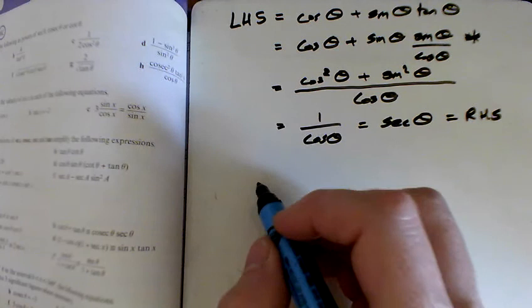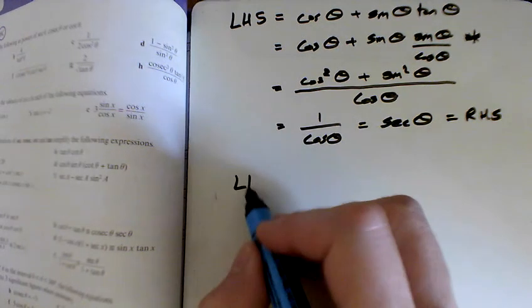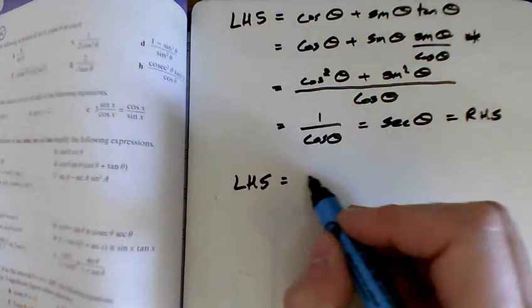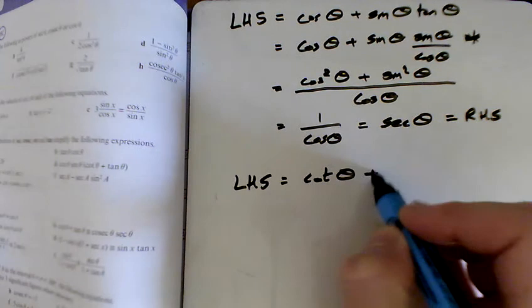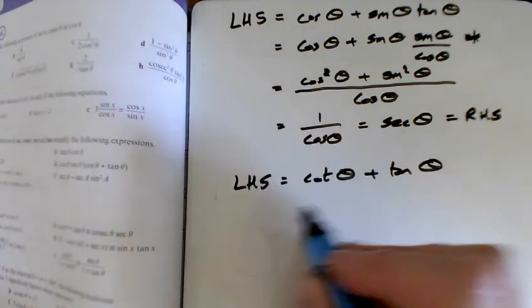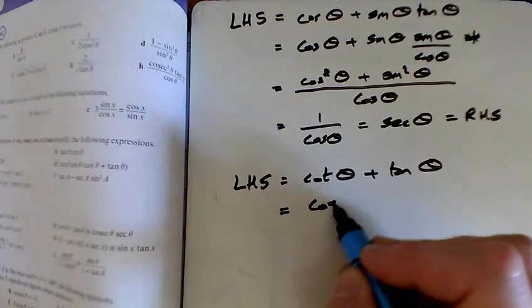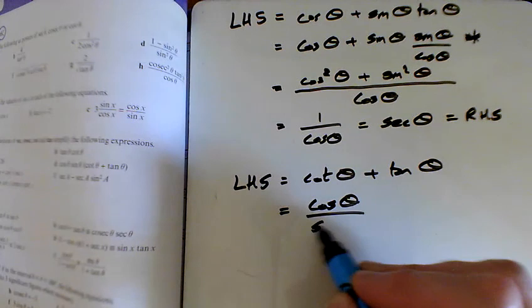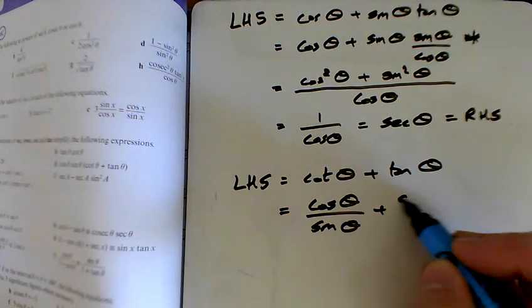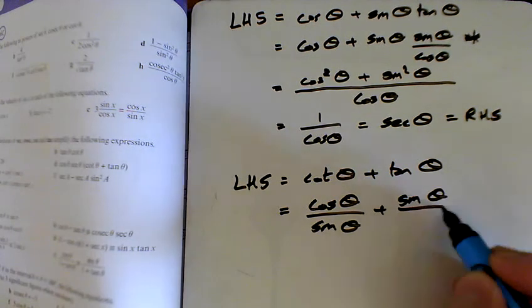I'm going to do B as well. So we'll start with left-hand side is cot θ plus tan θ. Cot is cos θ over sin θ, tan is sin θ over cos θ.